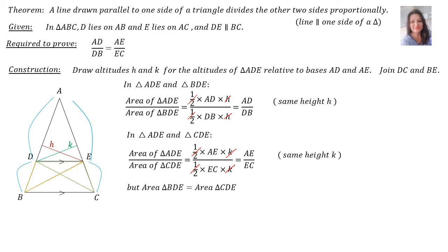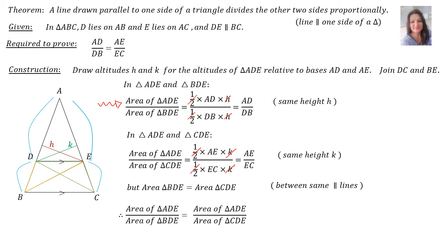Now, the area of triangle BDE — the yellow triangle — is equal to the area of triangle CDE — the green triangle — because they lie between the same parallel lines. Therefore, the area of triangle ADE over the area of triangle BDE equals the area of triangle ADE over the area of triangle CDE. This gives us AD over DB equals AE over EC. We have proven the theorem.